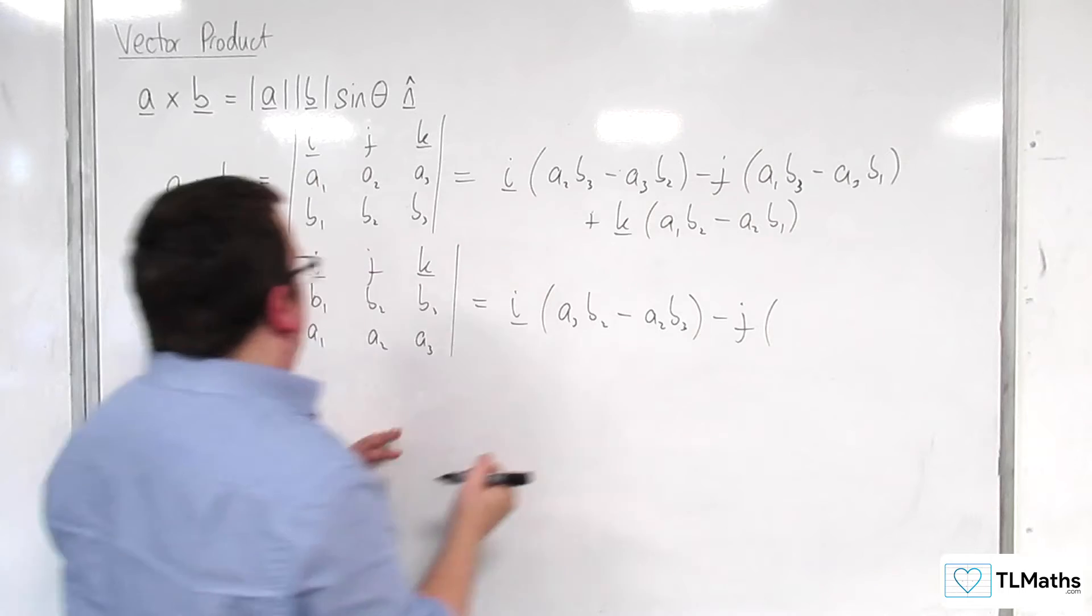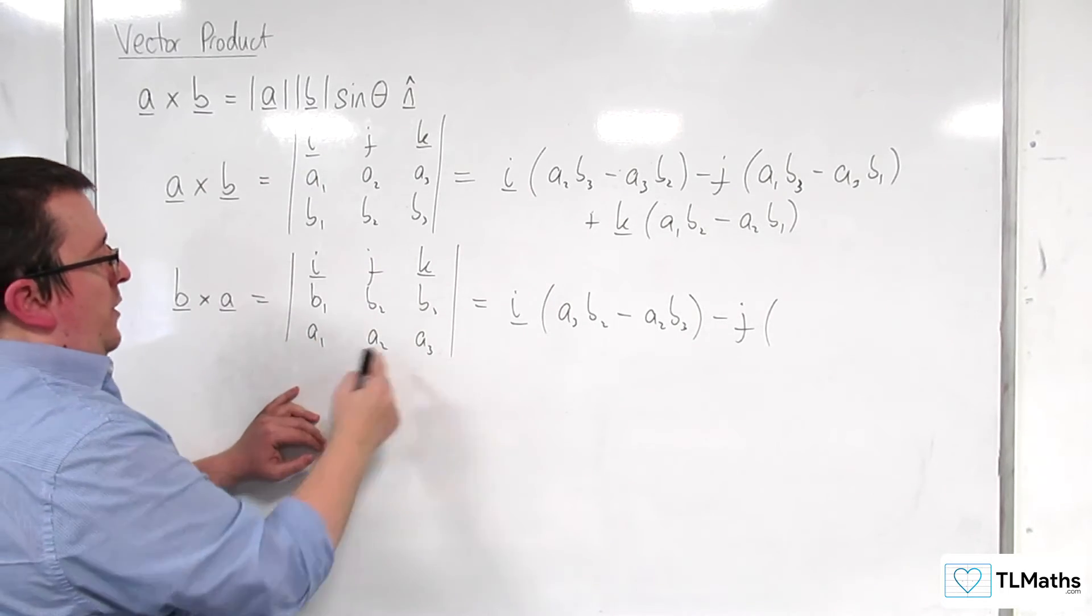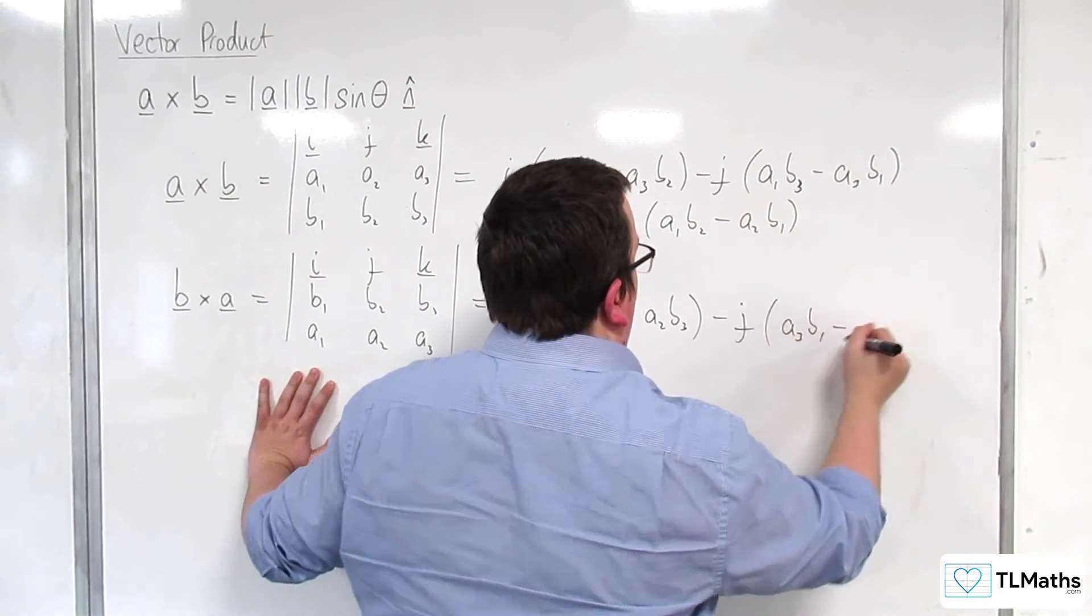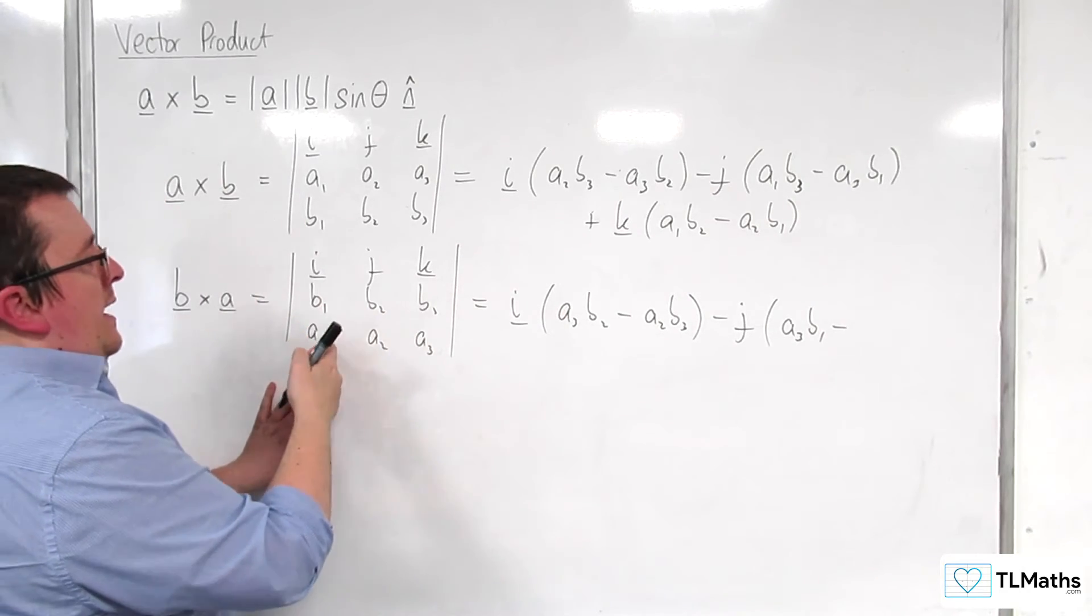take away J times B1 times A3, so A3 B1, I'll write them that way around, take away A1 B3,